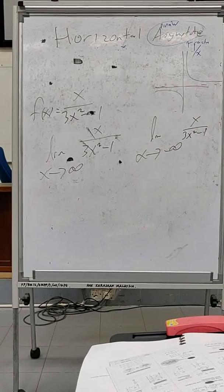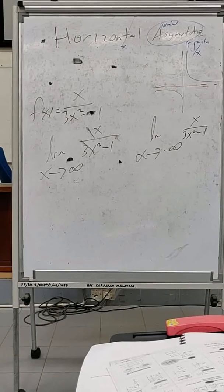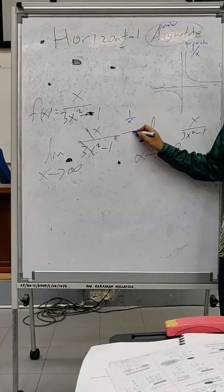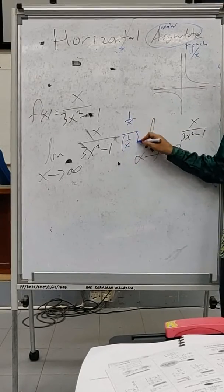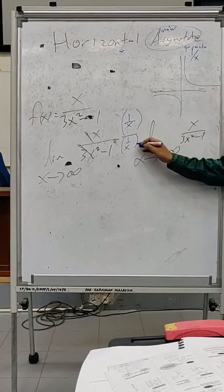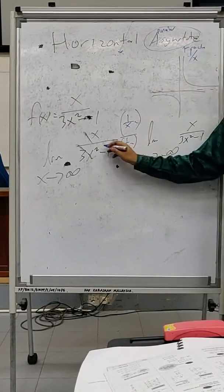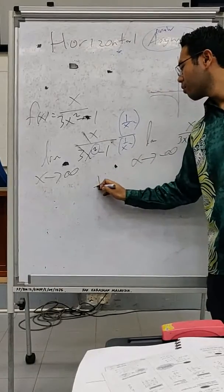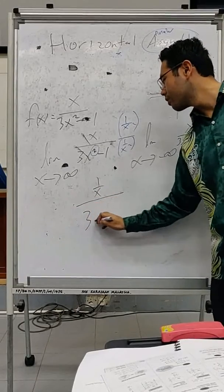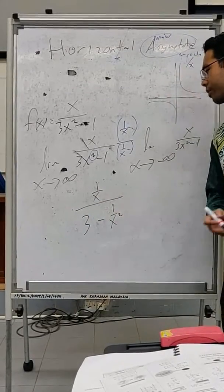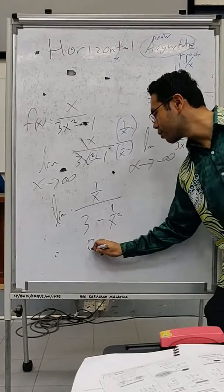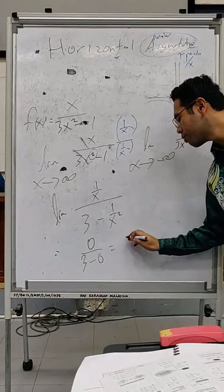How do we proceed? You know this already — this is the application for x approaching infinity. Multiply by 1 over x squared, because the highest power in the denominator is x squared. So we get 1/x over (3 minus 1/x²). Then substitute the limit: we get 0 over (3 minus 0), which gives you 0.